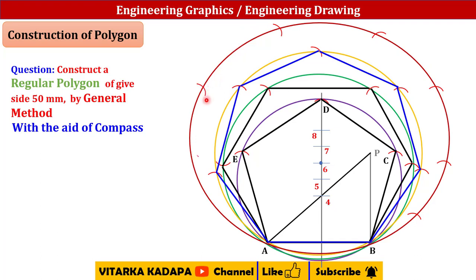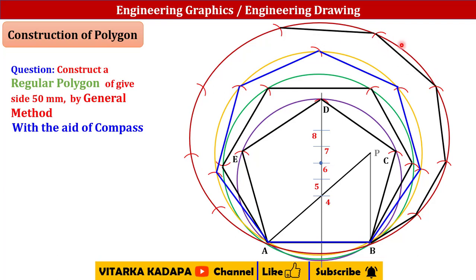Continue cutting arcs: second, third, fourth, fifth, sixth, seventh, and eighth points — giving eight points total for the octagon. Connect the lines: A to B, B to C, C to D, D to E, E to F, F to G, and so on, connecting all arcs to get the complete octagon.